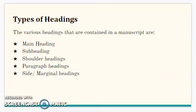Now we're going to look at the various headings in a manuscript. A manuscript has various headings — we have the main heading, which is at the top of the manuscript and tells what the manuscript is about. We have the subheading — not all manuscripts will have a subheading. And we have shoulder headings, paragraph headings, and something known as a side or marginal heading.